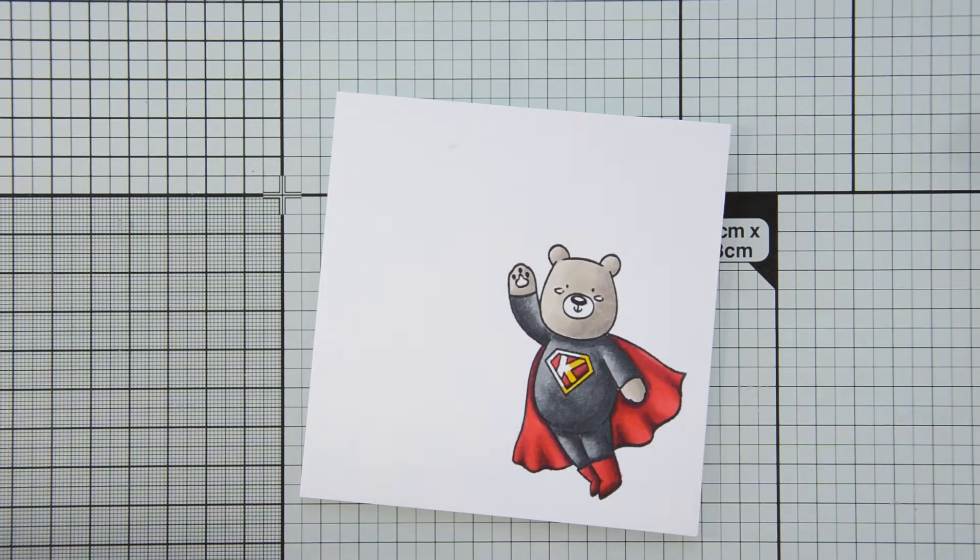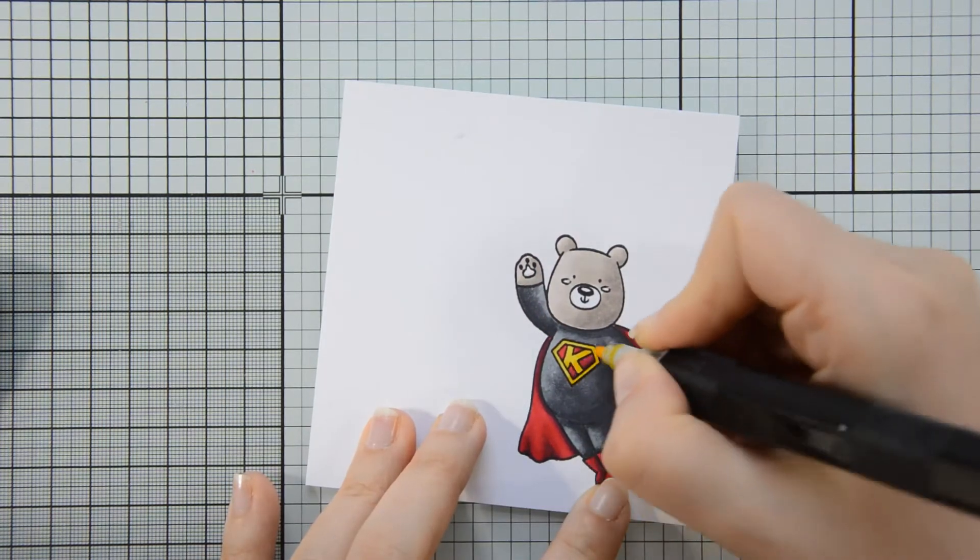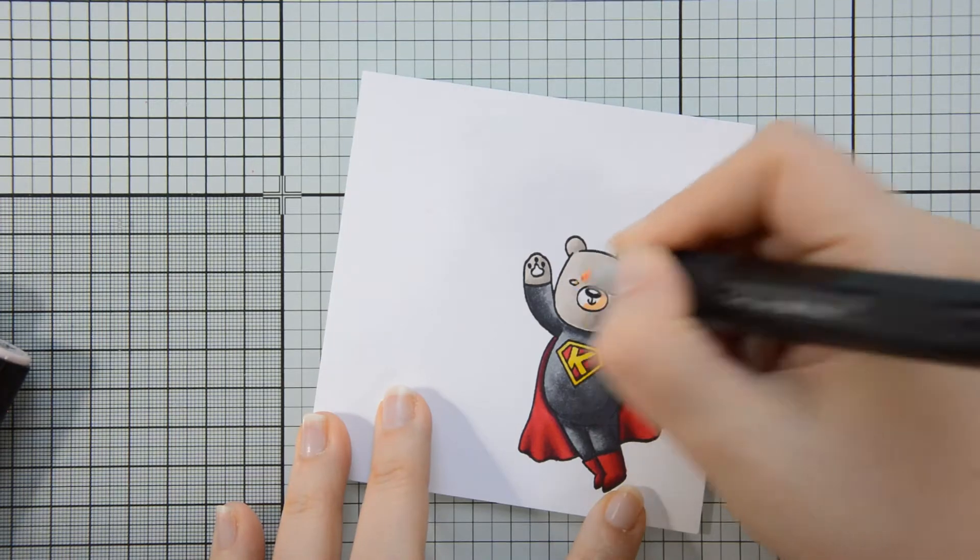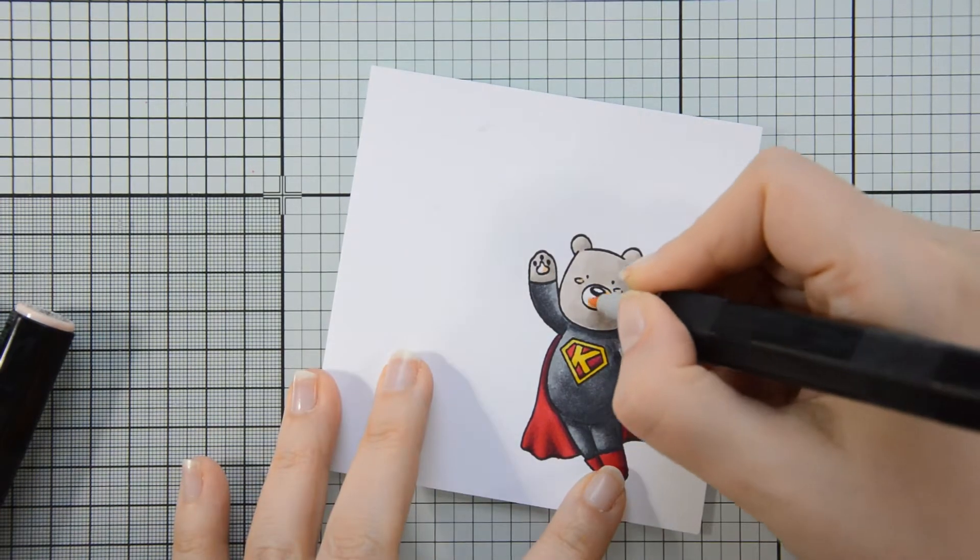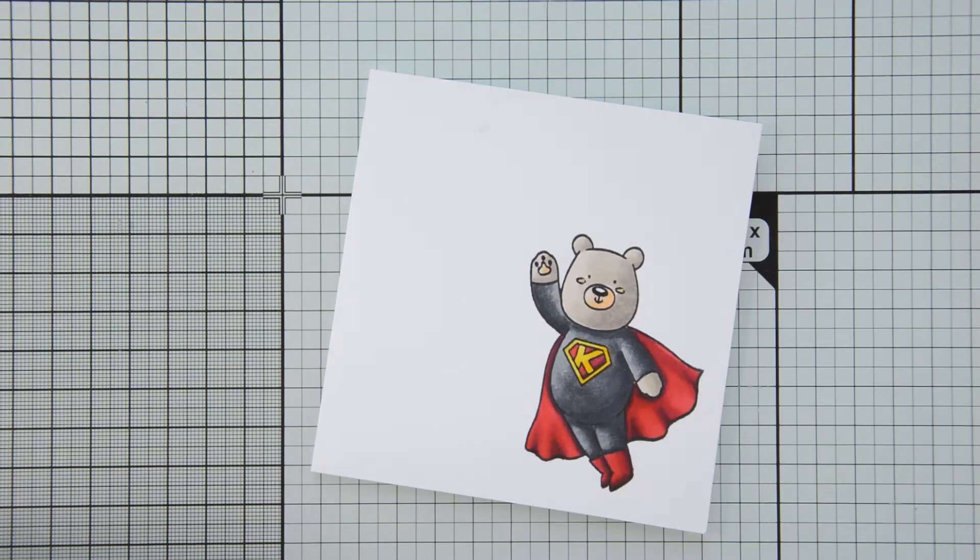For the edge of the logo and the letter K, I used CT4 and CT1. And finally, for Kobe's muzzle, his cheeks and his paw, I used FS9, FS4 and FS2.